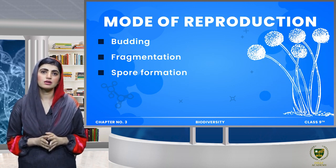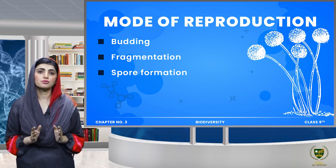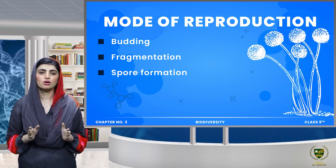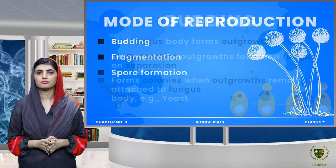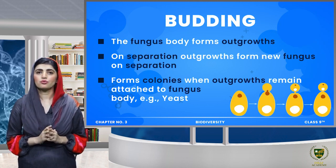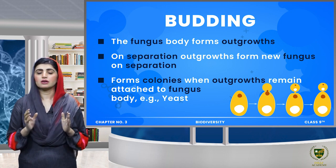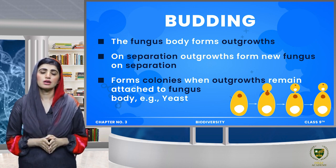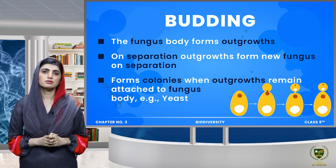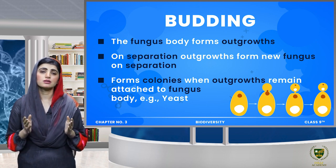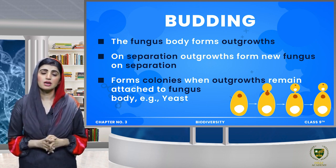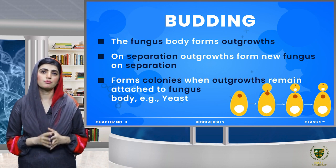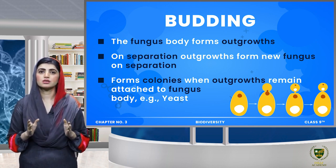If we talk about reproduction, fungi show different types of reproduction: budding, fragmentation, and spore formation. In budding, the hyphae of fungi form different buds — outgrowths. When these outgrowths separate from the fungus body, they develop into new fungi. If the outgrowth remains attached to the fungus body, it shows colonial organization, as we see in yeast.